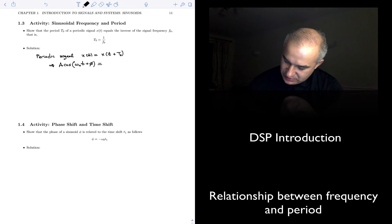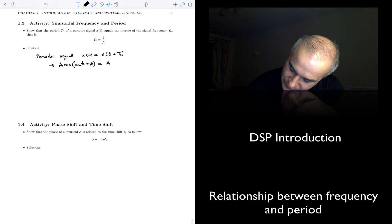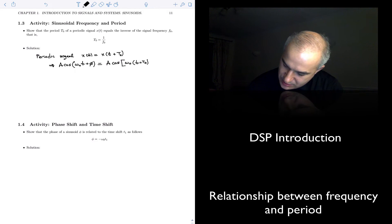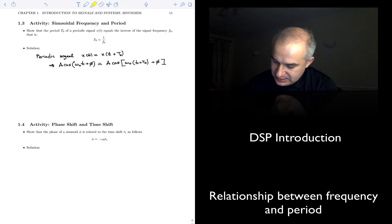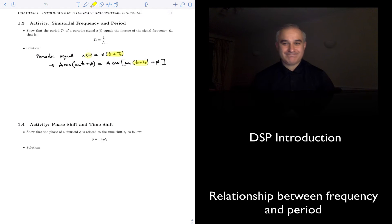If we have a sinusoidal signal, we're going to have cosine of omega 0 times t plus t plus t0 plus phase. So all I have done here is to substitute t for t plus t0 here.